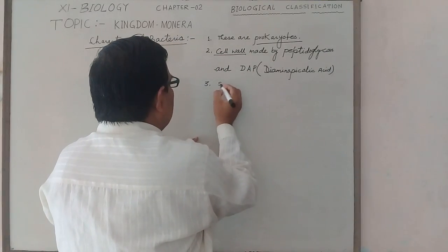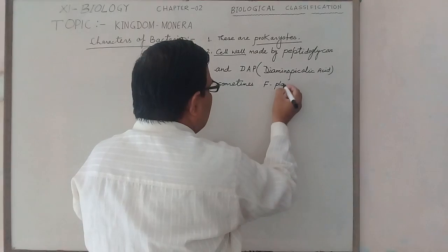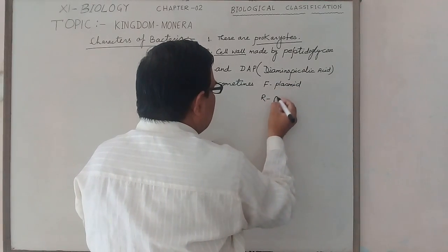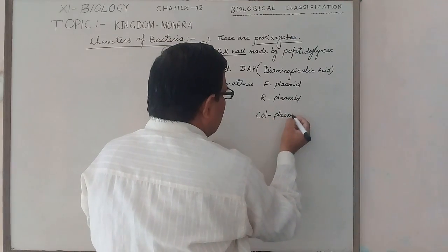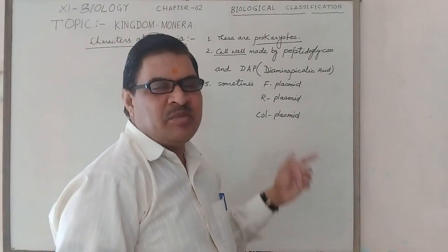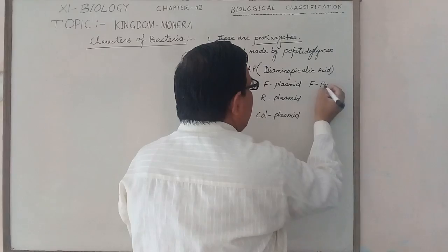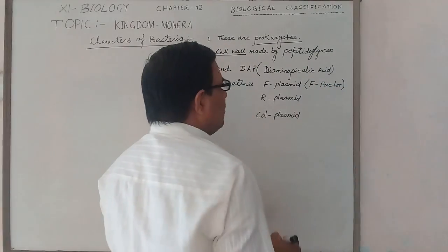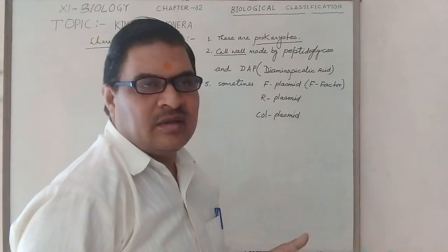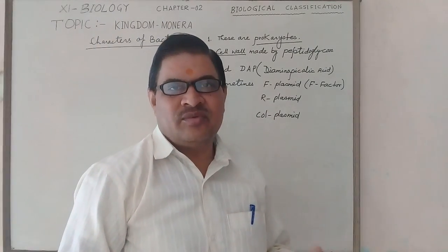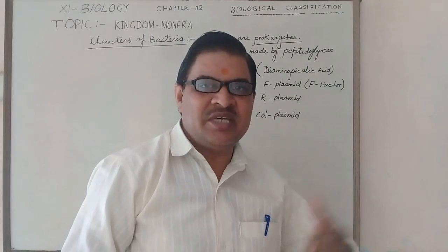A third character is that bacteria sometimes contain plasmids: F-plasmid, R-plasmid, and Col-plasmid. The F-plasmid, also called the F-factor, transfers genetic information from one bacterial cell to another during the conjugation method of genetic transfer.